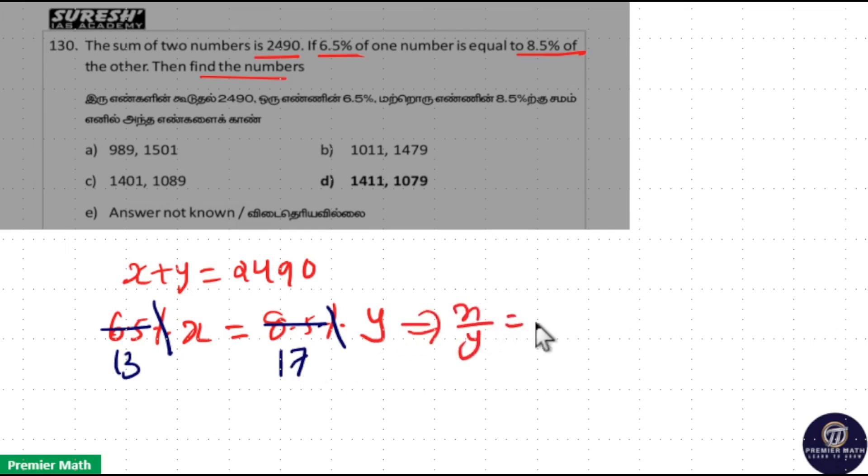Now from this, x/y equals 17/13. And x plus y means 17 parts plus 13 parts equals 30 parts.